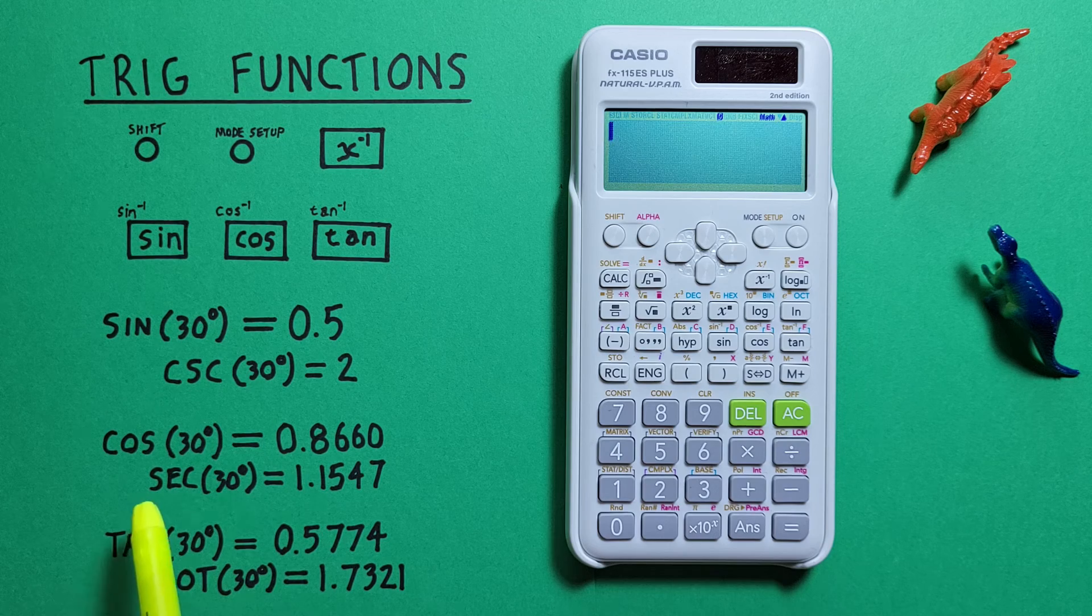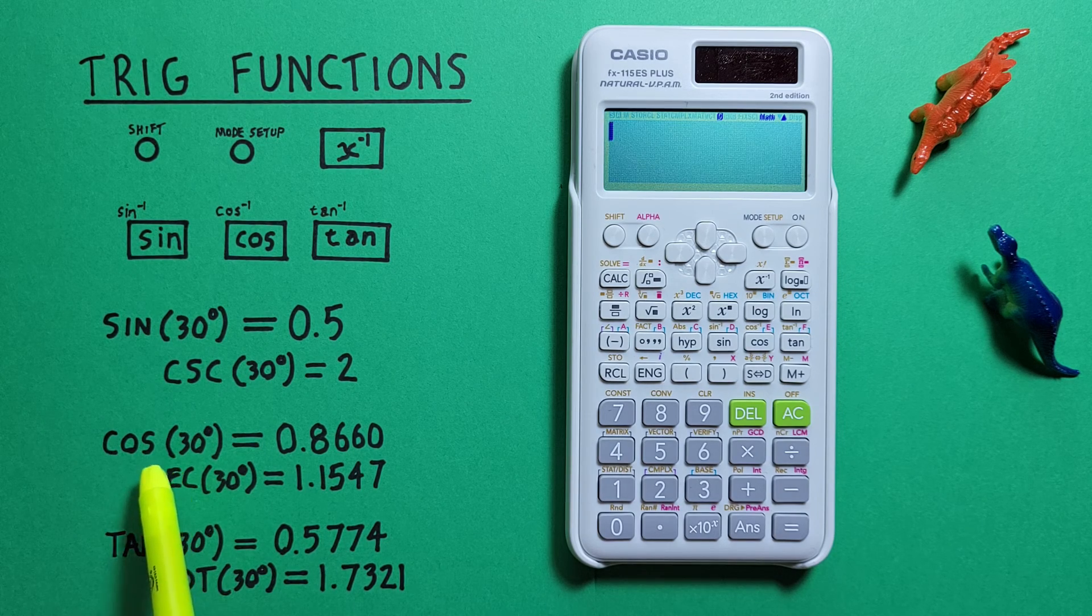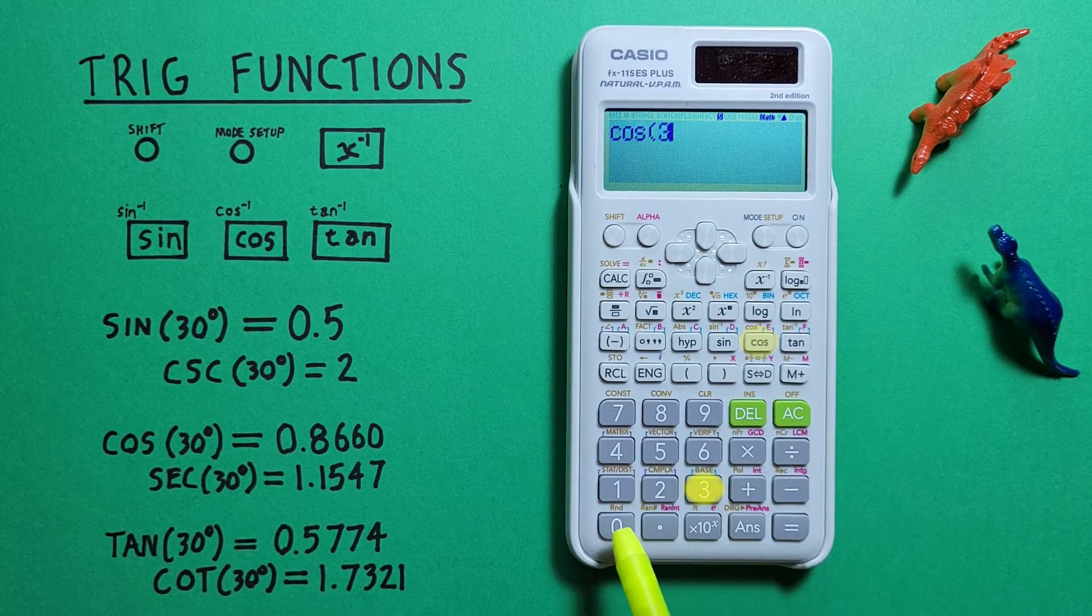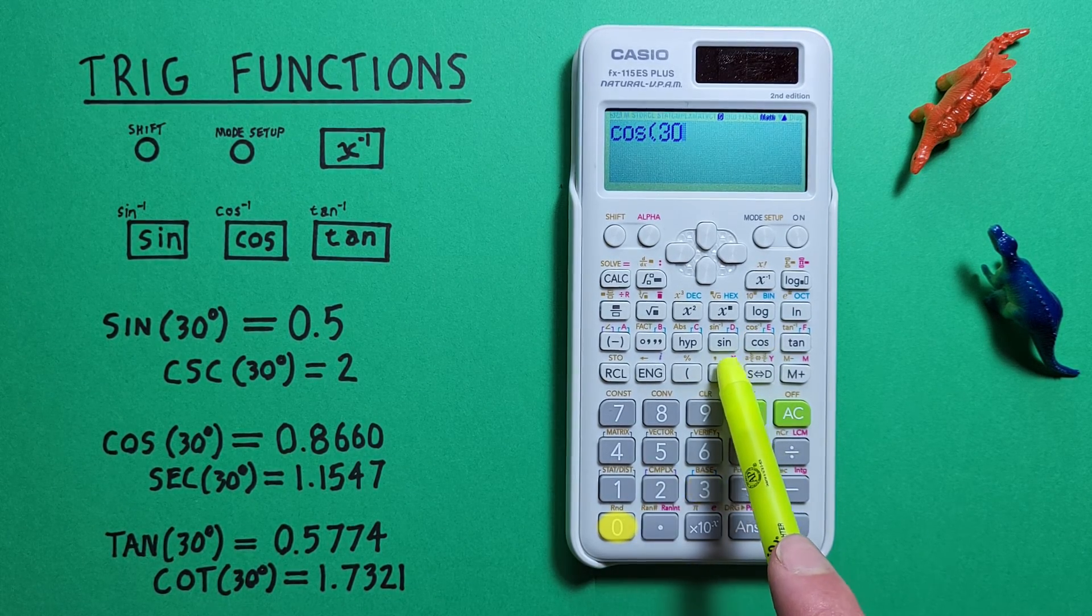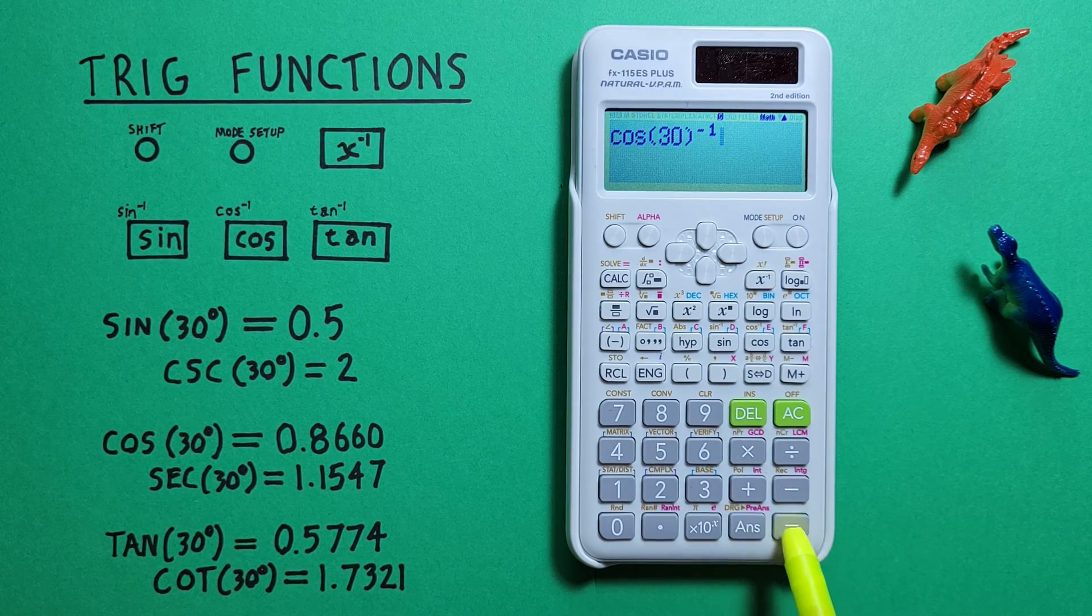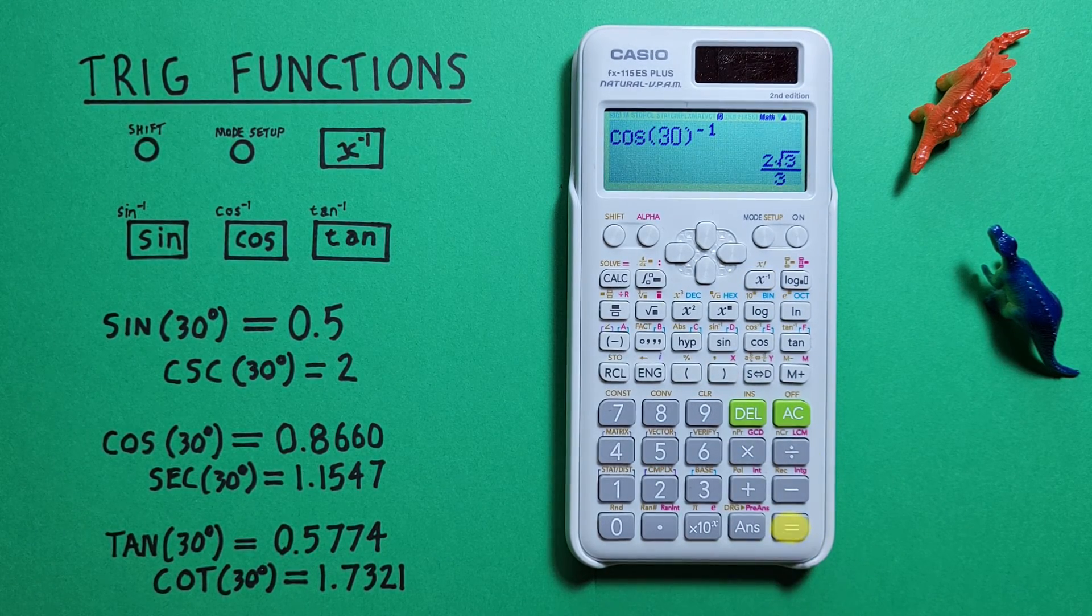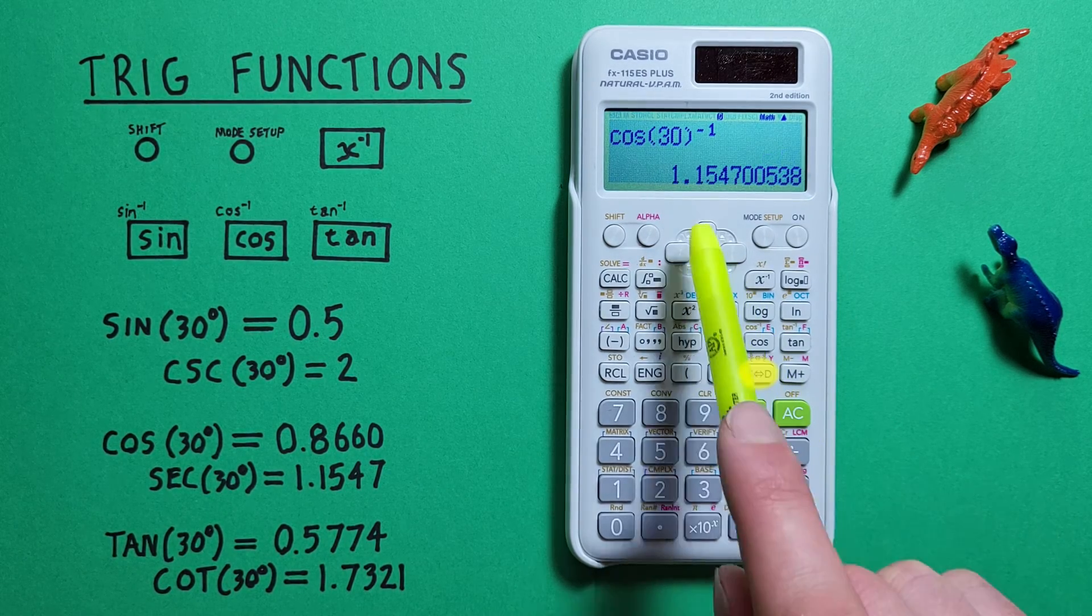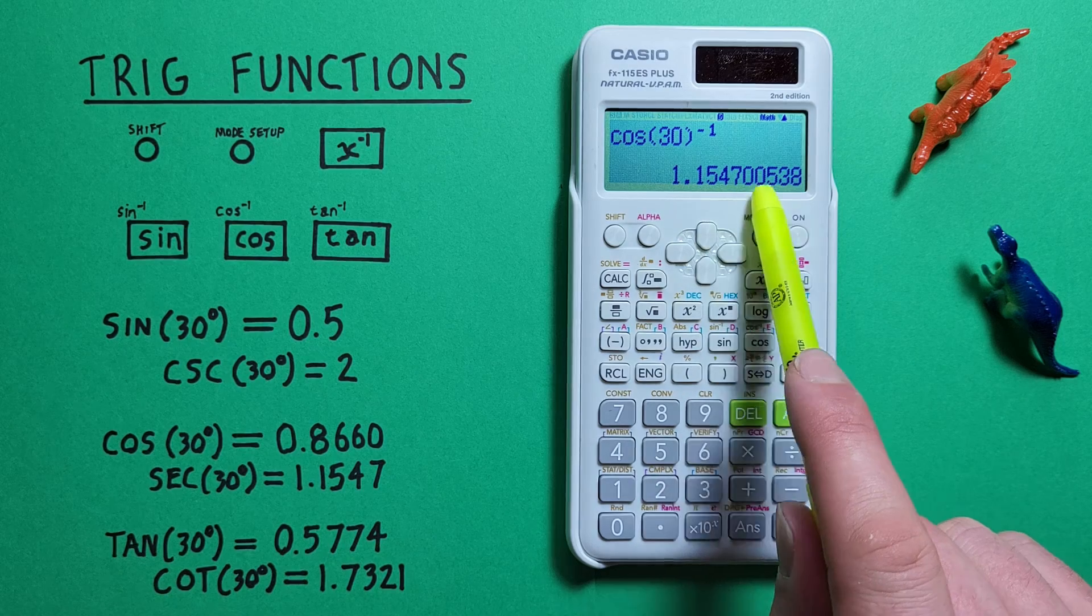For secant we use cos. So we go cos 30, close our bracket, and inverse, and press equals, and this gives us a fraction which we can convert to 1.1547, etc.